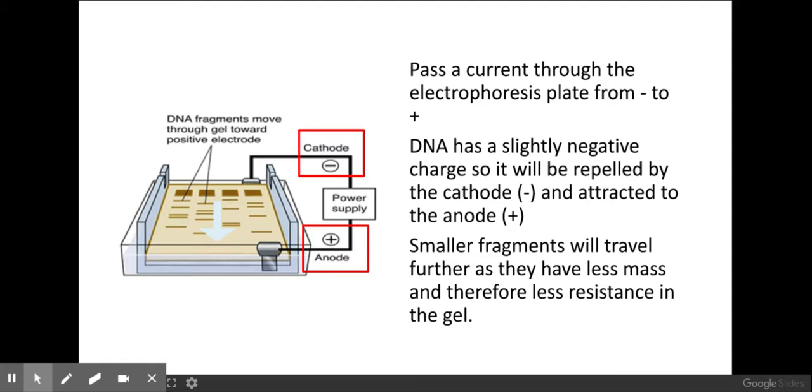If it's a smaller molecule, it'll have less resistance as it's passing through the gel, whereas those larger molecules with the larger mass, those larger pieces of DNA, will stay more towards the cathode end because they have more resistance as they're passing through the gel.